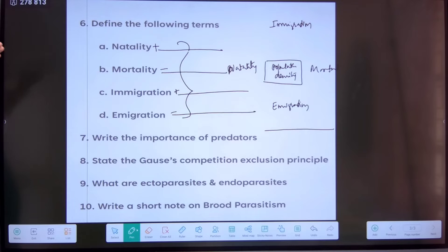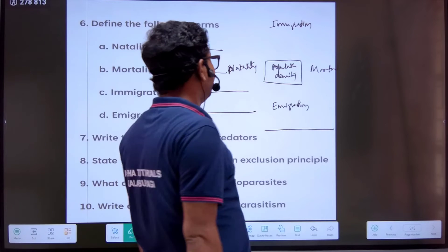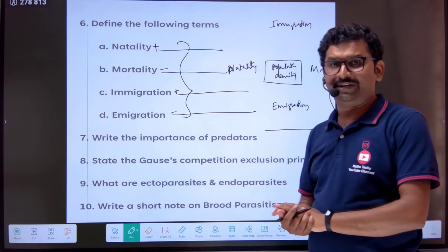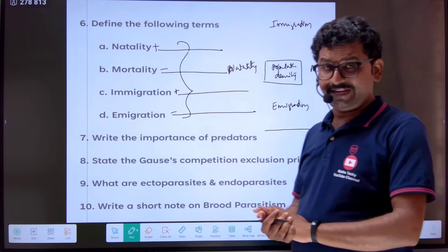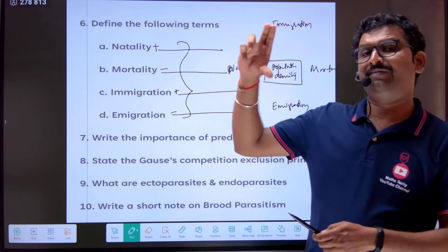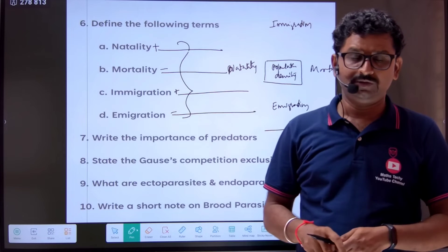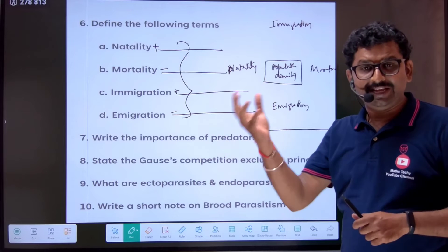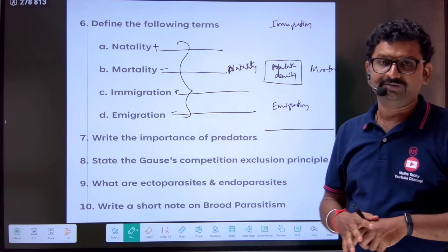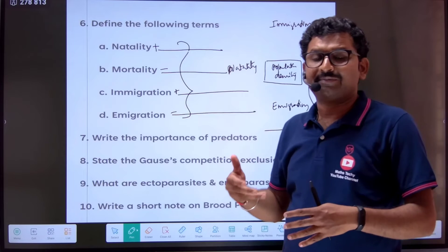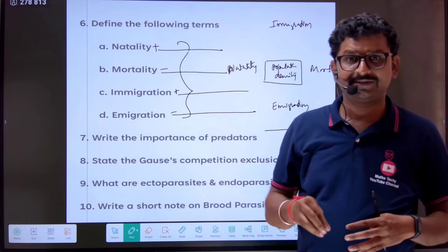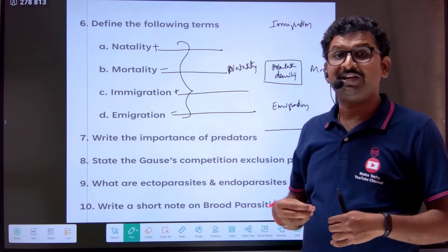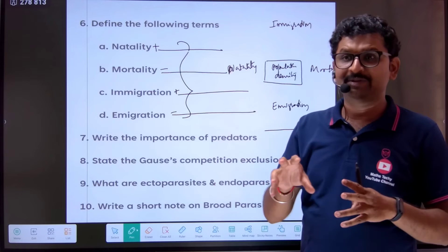Write the importance of predators — predation as a population interaction — in a paragraph. Why are predators necessary? A predator is one who hunts — the shikari. Prey is the one who gets killed.